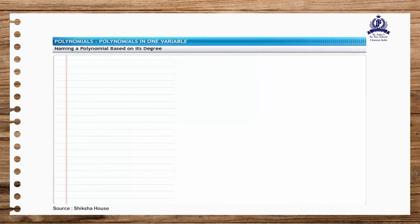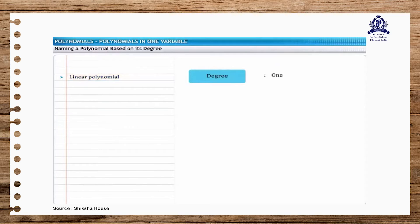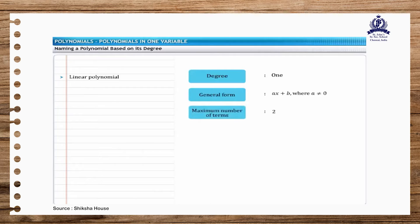You can name a polynomial on the basis of its degree. A polynomial of degree 1 is called a first degree, or linear polynomial. The general form of such a polynomial is ax plus b, where a is not equal to 0. The maximum number of terms is 2. For example, x plus 1 is a linear polynomial.